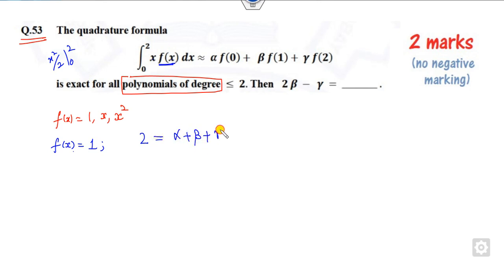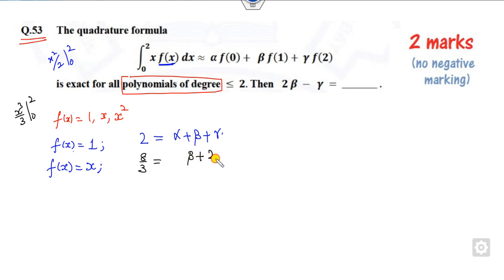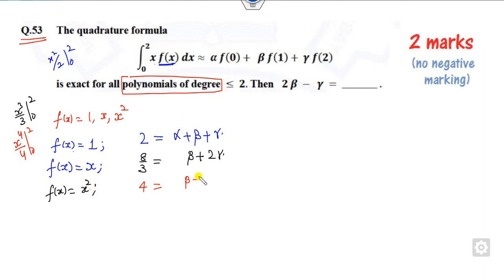Second case, when f(x) = x: the integral of x·x from 0 to 2 is x³/3 from 0 to 2, giving 8/3. This equals 0·α plus 1·β plus 2·γ, so β plus 2γ = 8/3. Third case, when f(x) = x²: the integral of x·x² = x⁴/4 from 0 to 2 gives 16/4 = 4. This equals 0·α plus 1·β plus 4·γ, so β plus 4γ = 4.